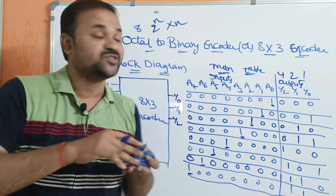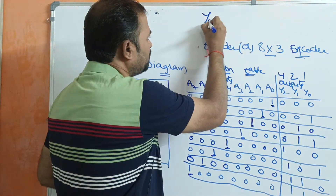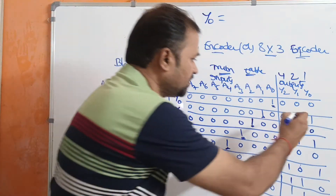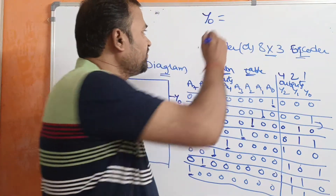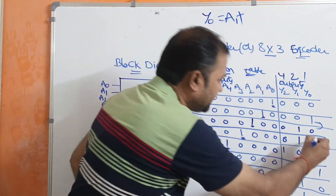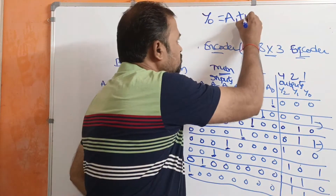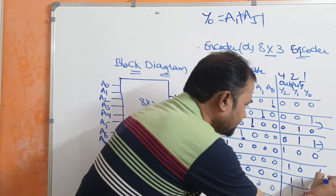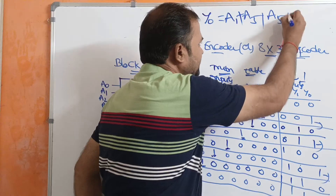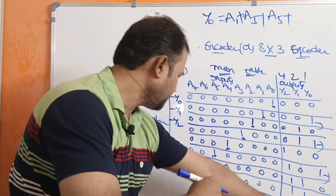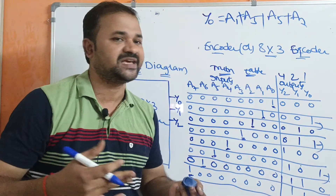Now we have to evaluate the logical expressions. First, let us evaluate y0. Observing the y0 column, we get a 1 when a1 is 1, when a3 is 1, when a5 is 1, and when a7 is 1. So the expression is: y0 = a1 + a3 + a5 + a7.